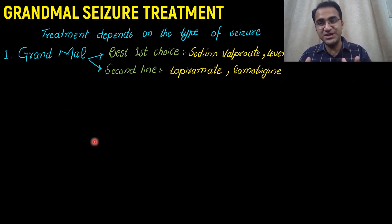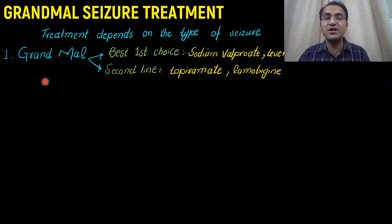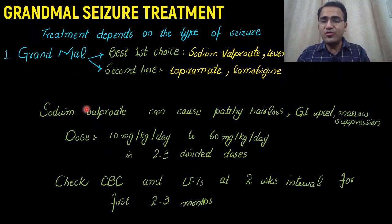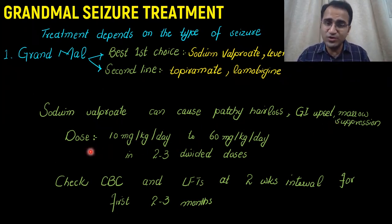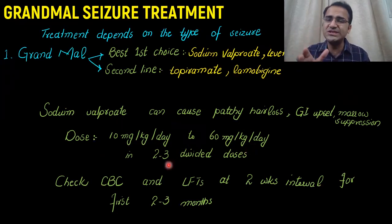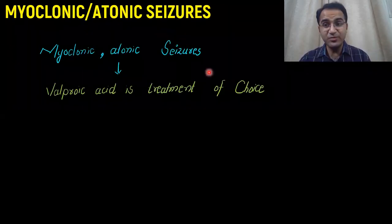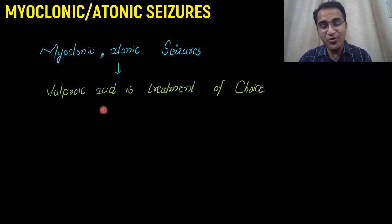Treatment depends on the type of seizure. For grand mal tonic-clonic seizures, the best first-choice drugs are sodium valproate and levetiracetam. Second-line drugs include topiramate and lamotrigine. Sodium valproate can cause patchy hair loss, GI upset, and even bone marrow suppression. The dose is 10 mg/kg/day up to 60 mg/kg/day in 2 to 3 divided doses.